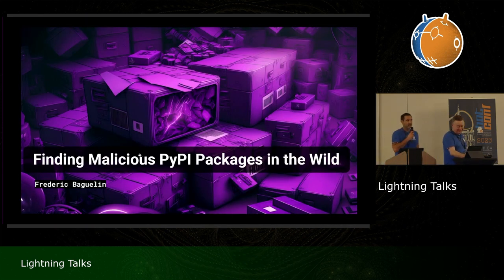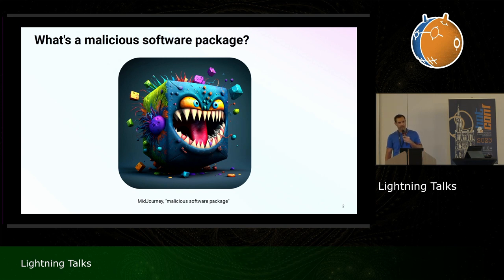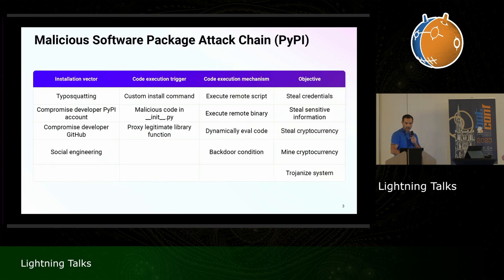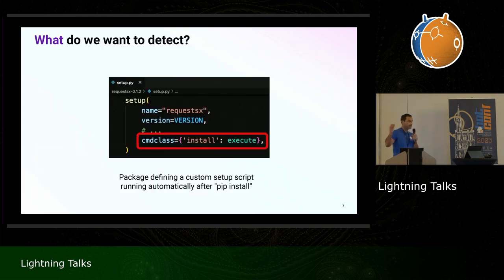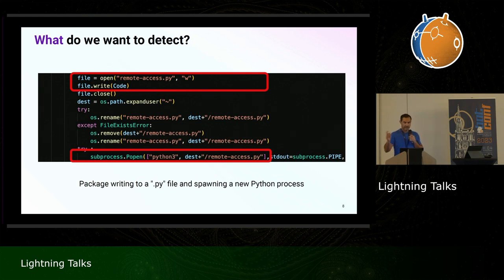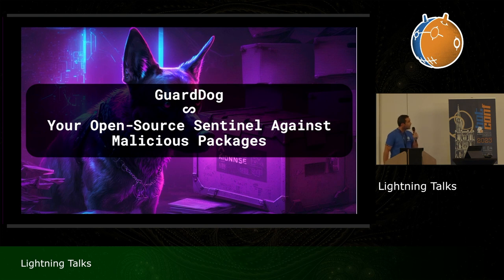I'm Fred, part of the organizing committee and a security researcher at Datadog. I'll sum up a presentation my colleagues did a few weeks ago. It's about malicious software packages, mostly on PyPI and npm. The malicious software package attack chain consists of: initial vector, code execution trigger, code execution mechanism, and final objective. We want to detect typosquatting on PyPI, suspicious or empty project descriptions, malicious source code directly available after pip install, file writing and execution, and cookie stealing. To do this, we released GuardDog: a fully open source, self-contained tool supporting PyPI and npm that ingests source code and package metadata.